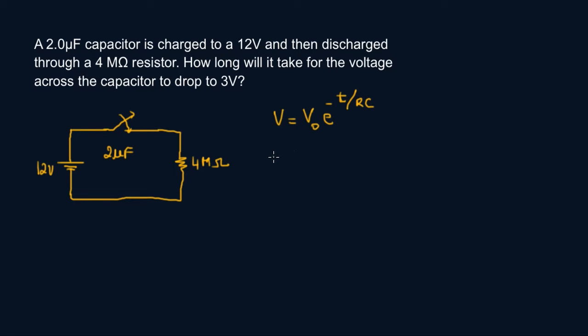So here V over V0 equals e to the power minus t over RC, and therefore using the natural log function, ln of V over V0